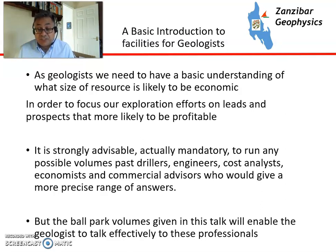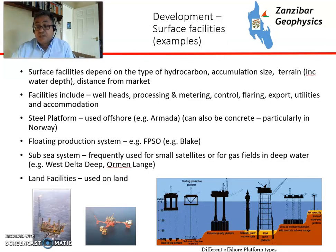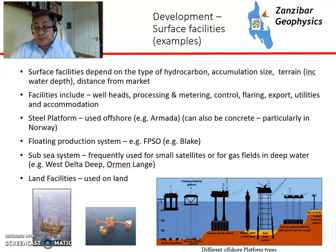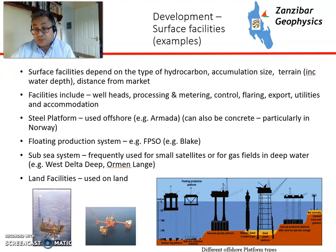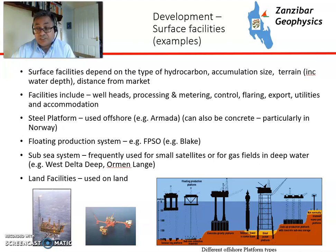This is gleaned from my 26 years of professional experience working for an oil and gas major. Facilities are dependent on many things: first, the hydrocarbon type — whether it's dry gas, wet gas condensate, black oil, volatile oil, etc.; accumulation size; the terrain including water depth and distance from market. Facilities that you will need include wells, wellheads, processing and metering, control, flaring, export, all the utilities, and the accommodation for the people who monitor this day to day.